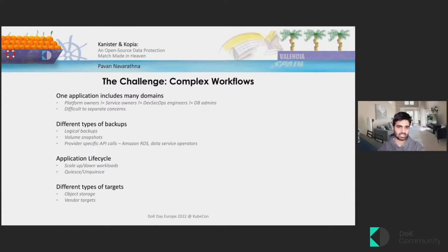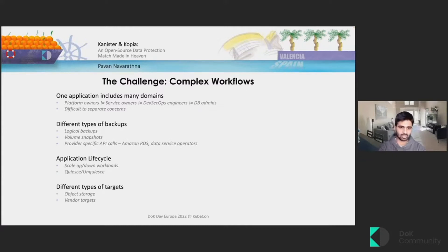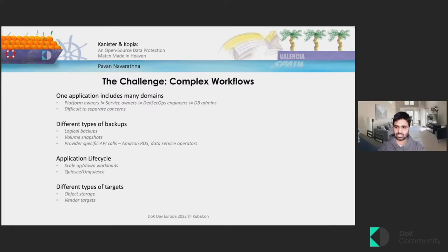Each cloud-native application includes a lot of different domains or components. Each of these components may have different owners, and they all have their own requirements and concerns — none of which can be overlooked when protecting the application. There are also different types of backups component owners may need: logical backups of databases, volume snapshots, or even something provider-specific like RDS snapshots for hosted Postgres. Some applications also need a way to scale up or scale down during the snapshot process, and there are different types of targets for where backups are stored.